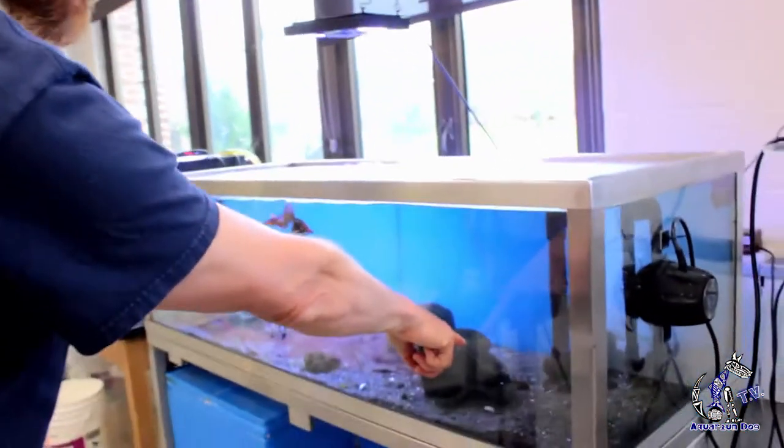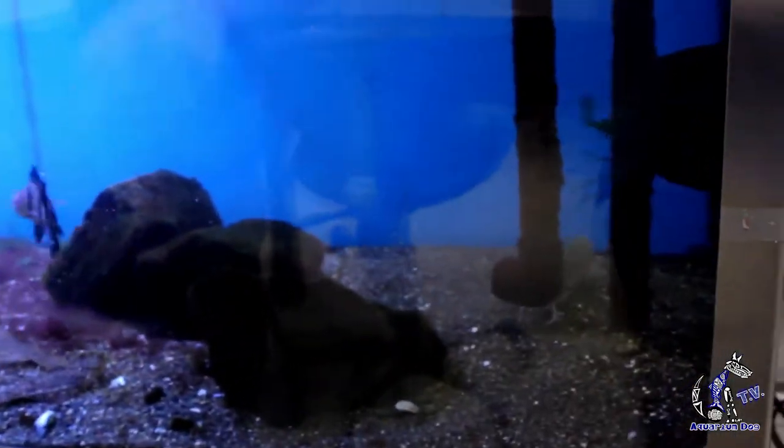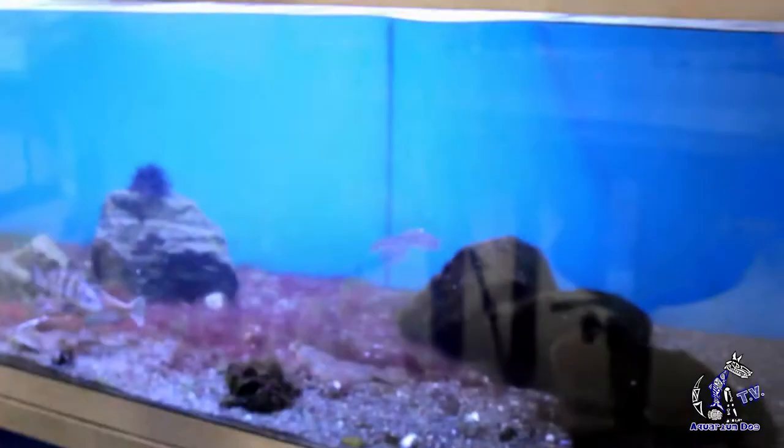I got this guy back here, the rock gunnel. Oh! Oh no! The hake tried to eat him. That's why he hides. It's a cool fish. Oh, there he goes. A little eel-like blenny thing.